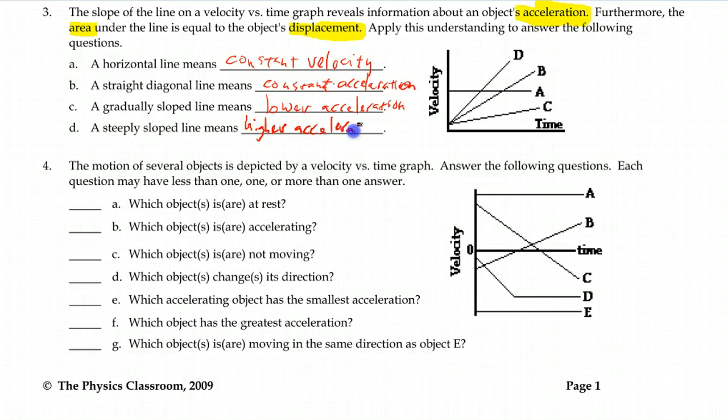Which means you're going to have a higher value of acceleration, which means you're going to have a larger change of your velocity. And so you get more rapidly changing how fast you're going. In this next one, the motion, we have a velocity time graph with several different motions.